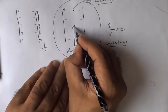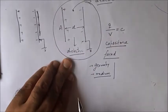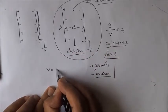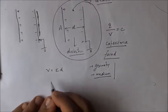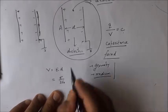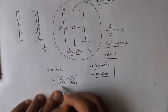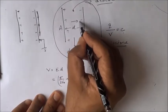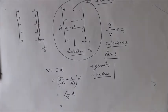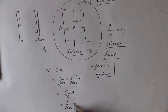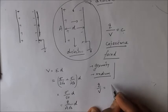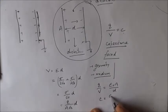Let the distance between the plates be d and the area of each plate be A. The potential difference is a uniform field times distance: V = E × d. The electric field between two sheets of charge is σ/(2ε₀) due to each sheet, so the total field is σ/ε₀. Therefore the potential difference becomes (σ/ε₀) × d. Since σ = Q/A, this gives V = Qd/(ε₀A), so Q/V = ε₀A/d.